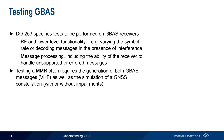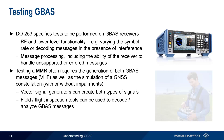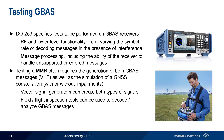For example, we might want to test that the multimode receiver correctly incorporates correction data, or excludes satellites whose signals are faulty or unreliable. Vector signal generators can be used to create both GBAS and GNSS signals for testing these receivers, both with and without added noise or interferers. For testing GBAS installations, field or flight inspection tools can be used to decode and analyze the live, over-the-air GBAS signals.